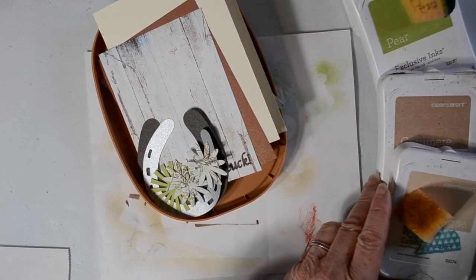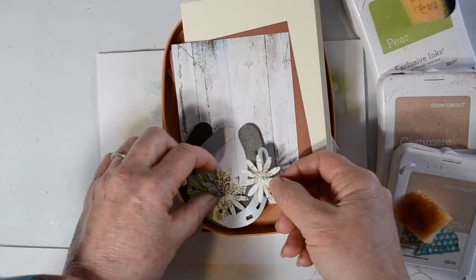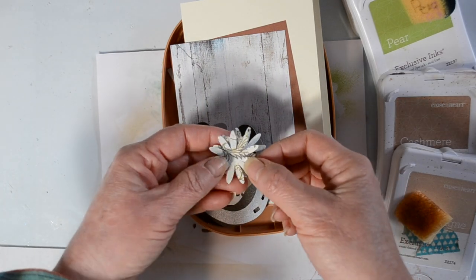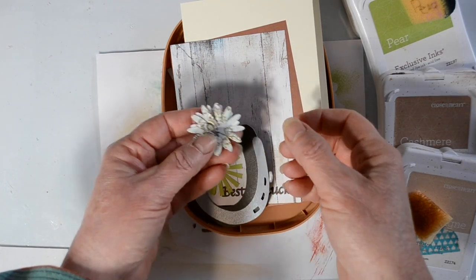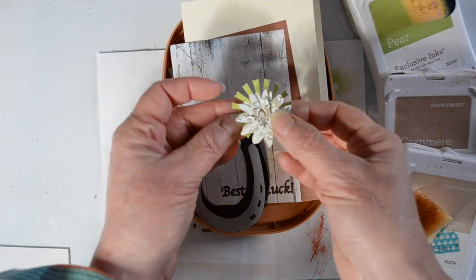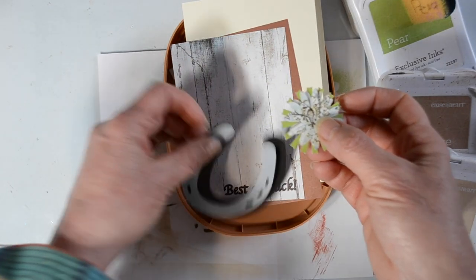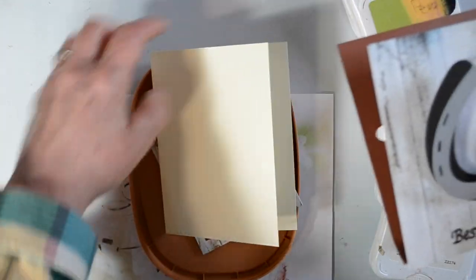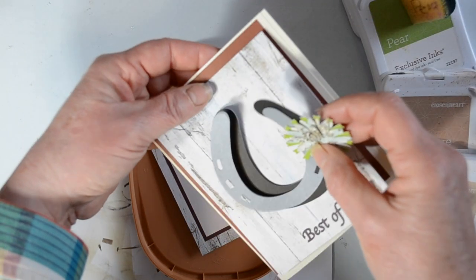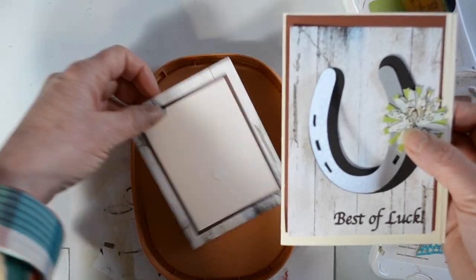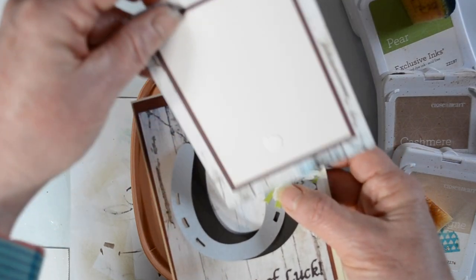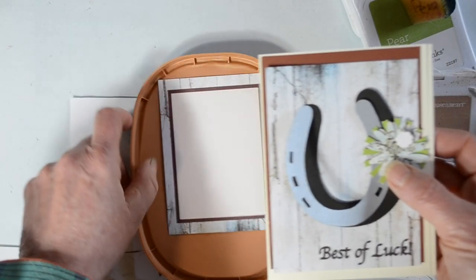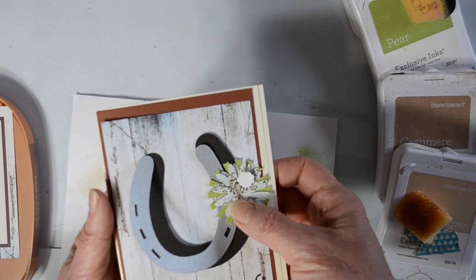I have quite a few ink pads out here because I'm going to be coloring up some of these pieces, and then I have some die cuts that I've already cut in Cricut Design Space. I have this horseshoe, a flower, this old piece of brown scrap, this off-kilter cut note card, and the inside of my card where I'll put my sentiment.